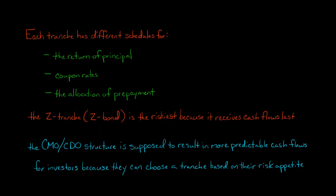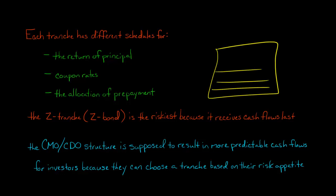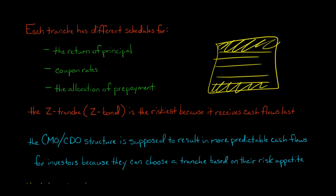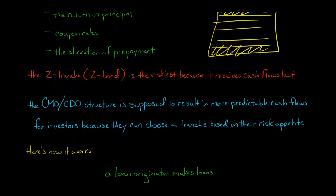You can basically look and say: if you have very low appetite for risk, you want to be in the top tranche. But if you're willing to take on some risk, provided you get a potentially higher return for it, then you can invest in one of the lower priority tranches.